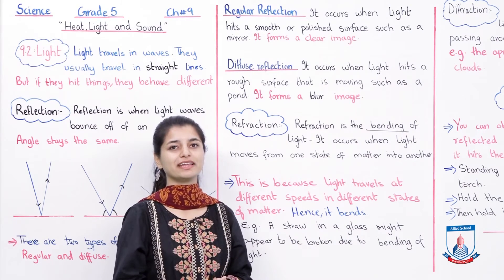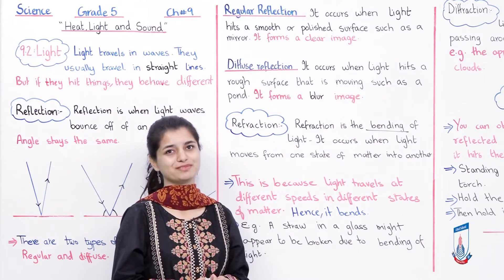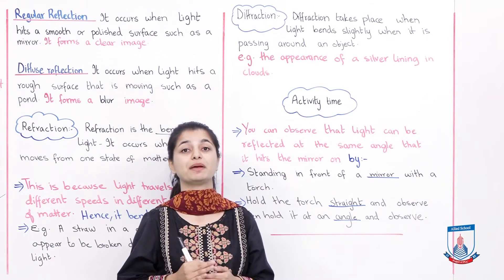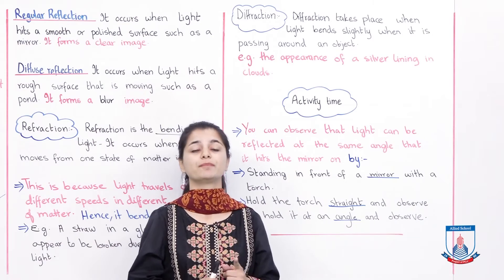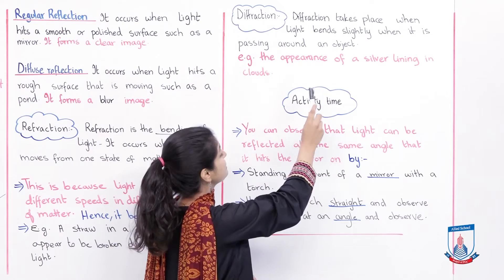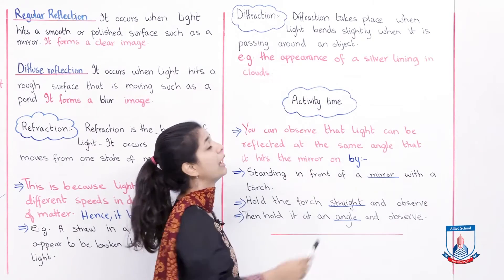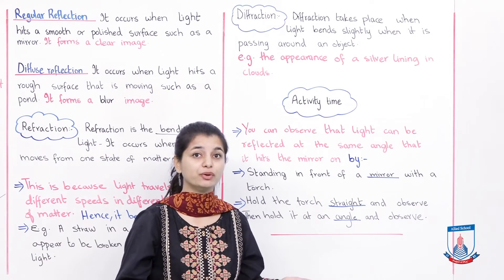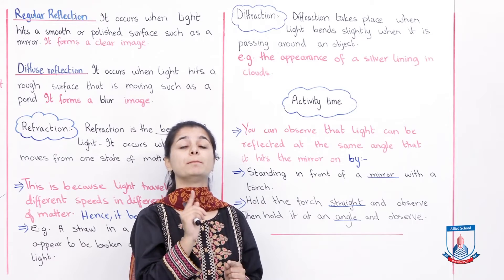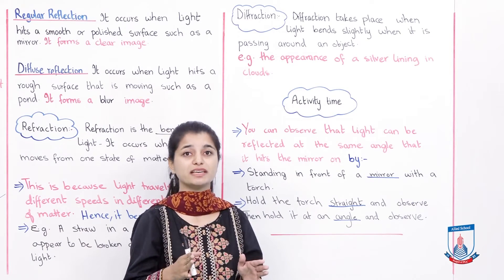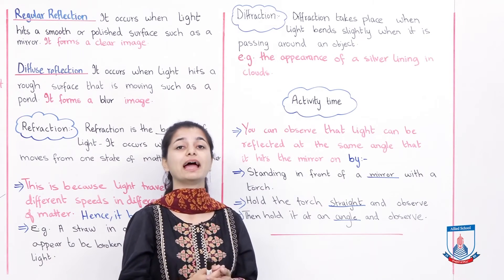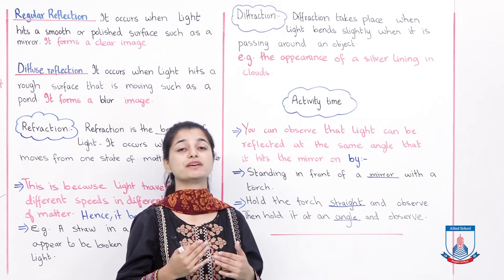Now let's discuss the third way in which light behaves: diffraction. Diffraction takes place when light bends slightly when passing around an object. It doesn't bounce back or go through the object — it passes around it. In that case, light has a slight bending which gives it a different look.